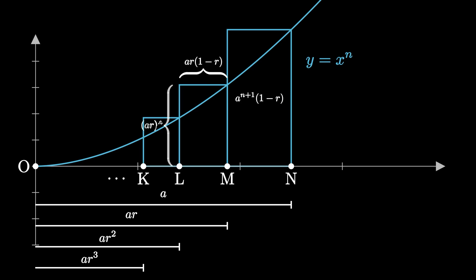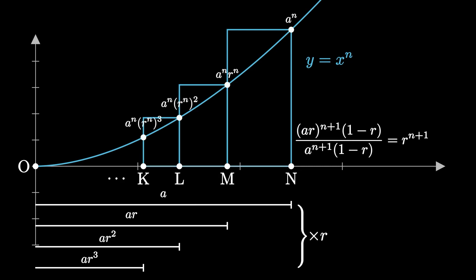Multiplying everything, we get ar to the n plus 1 times 1 minus r. The ratio between this and our previous expression is just r to the n plus 1, which is the common ratio we're looking for. We can actually see that for each successive rectangle, the length of the rectangle is multiplied by r and the height of the rectangle is multiplied by r to the n, which results in an overall ratio of r to the n plus 1.